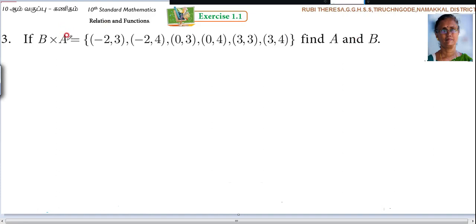B cross A - they have given B cross A. So B equals the set of all first coordinates of elements of B cross A. This is first coordinate, this is second coordinate. Why? It is B cross A.